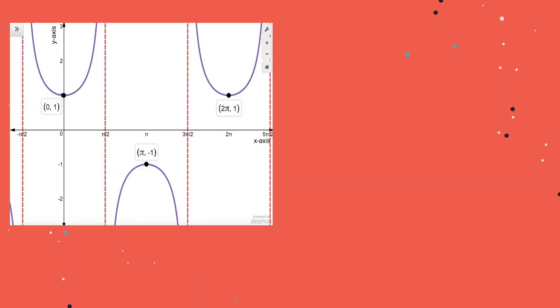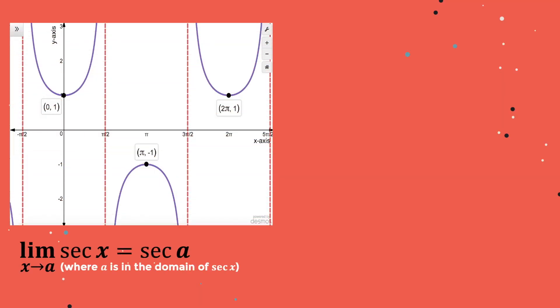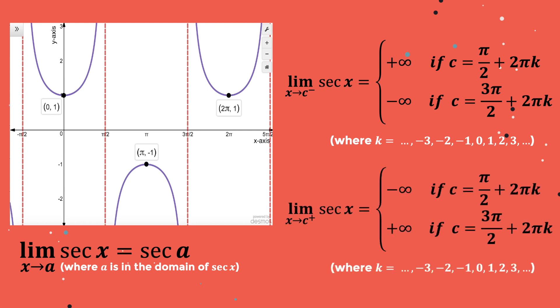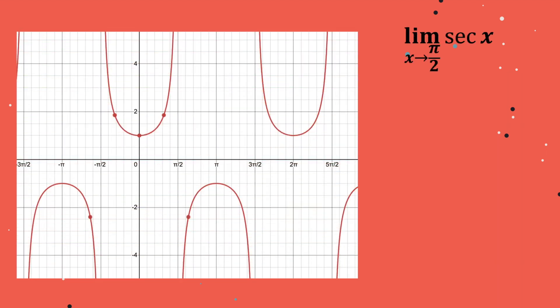Finally, let's look at the limit of secant and cosecant. The limit of secant x as x approaches a is equal to secant a, wherein a is in the domain of secant x. Here's the limit of secant x as x approaches c from the left and as x approaches c from the right. Let's find the limit of secant x as x approaches pi over 2. Since pi over 2 is not in the domain of secant x, we have to analyze its left-hand and right-hand limit. As x approaches pi over 2 from the left, the graph goes upward infinitely, which means that the left-hand limit is equal to positive infinity.